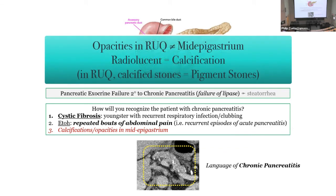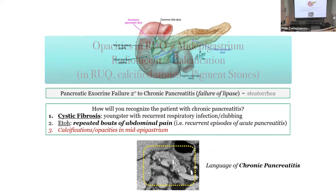Pay attention to opacities in the right upper quadrant — those are stones — versus mid-epigastric calcifications, which indicate the pancreas. Cholesterol stones are radiolucent — you don't see those on X-ray. For radio-opaque stones you need calcium, so calcium bilirubinate stones related to hemolysis — sickle cell or any hemolytic condition — cause hyperbilirubinemia that gets calcified. Those are the radio-opaque stones in the right upper quadrant.